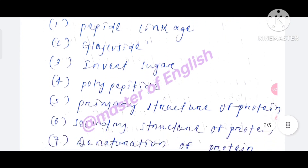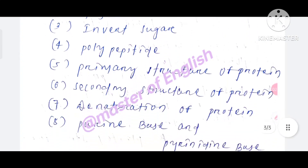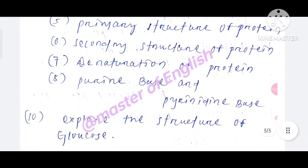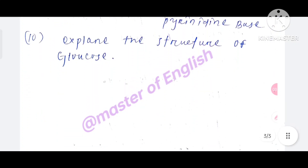Short note topics include: invert sugar, polypeptide, primary structure of protein, secondary structure of protein, denaturation of protein, purine base and pyrimidine base. Explain the structure of glucose.